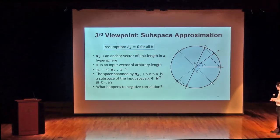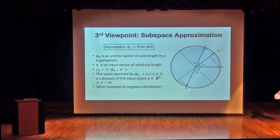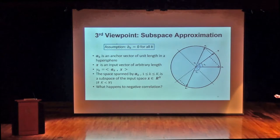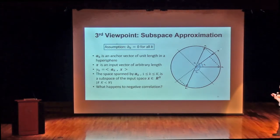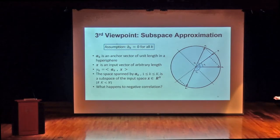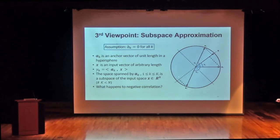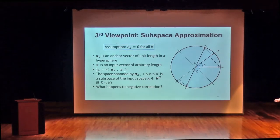Now I look at subspace approximation on a hypersphere in 25-dimensional space. A_1 to A_6 are unit vectors on the sphere, and X (the input patch, normalized) is also on the sphere, running around. When you do the inner product, you get the projection of X onto A_K. Y_K is the response — the projection. The rectified linear unit, ReLU, basically says: if your projection is negative, I kill it. I don't want any negative part — only preserve the positive part.